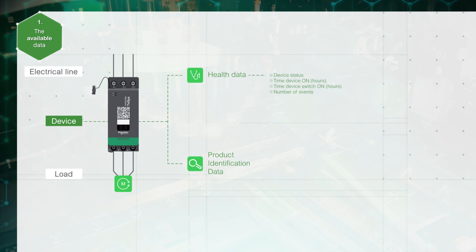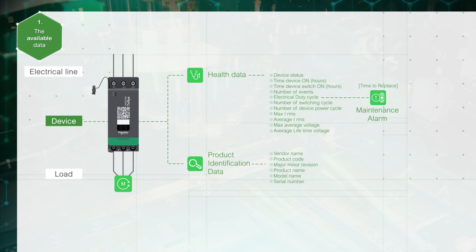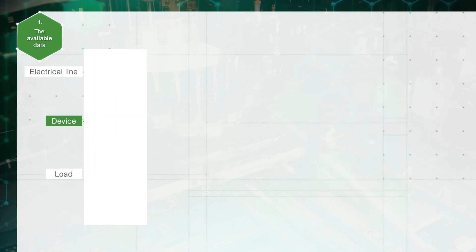At the device level, product identification and health data are available: time device on from the beginning, time device switch-on, tracking the time the motor has been engaged, and number of events — which can help in preventive maintenance and diagnostics. A maintenance alarm is triggered, for instance, when ninety percent of the duty cycle is exceeded. Health data and product identification data are useful for diagnostics and preventive maintenance planning.